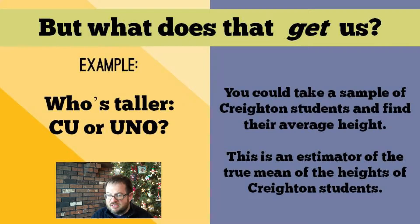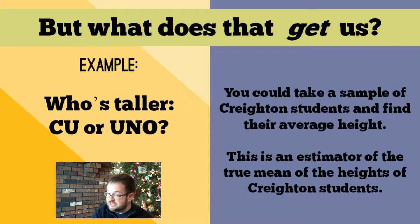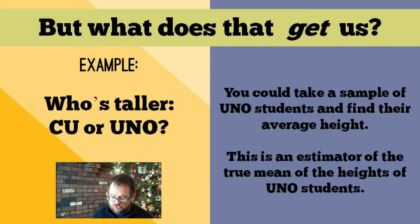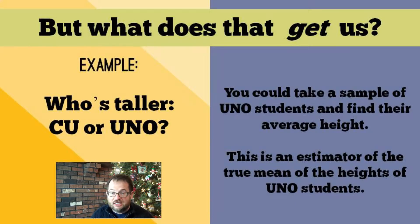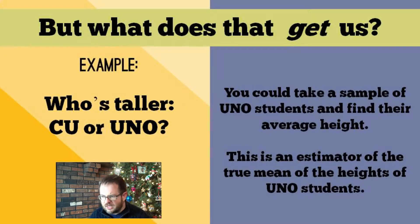It's the average height at the time that you measured them — some of them might be growing, so if you measured them tomorrow you'd get a slightly different number. We could have a descriptive statistic. The average of my sample is not the mean height of Creighton students, but it's an estimator of the mean height. And you could do the same thing with UNO students. All of which is fraught with problems. Let's say we use the symbol Z for height — meteorologists always use Z for height, related to X, Y, and Z coordinates. So Z-bar CU is the average height of our sample from Creighton, and Z-bar UNO is our average height from University of Nebraska Omaha.